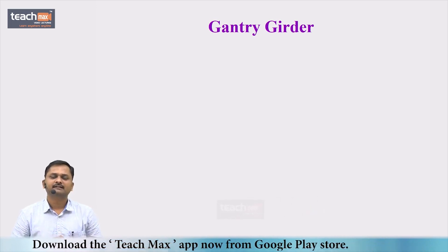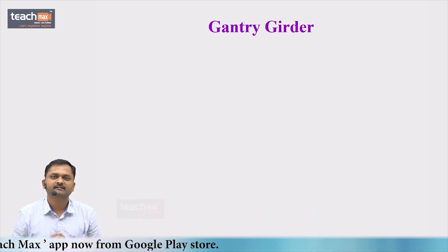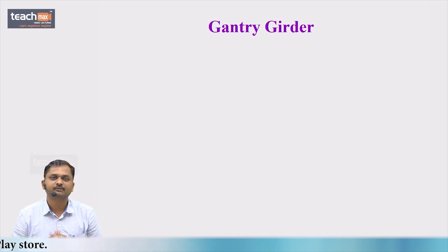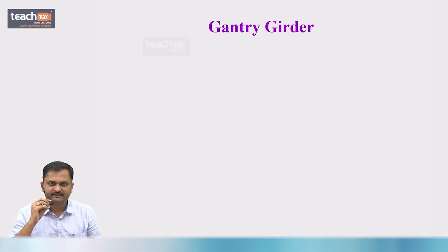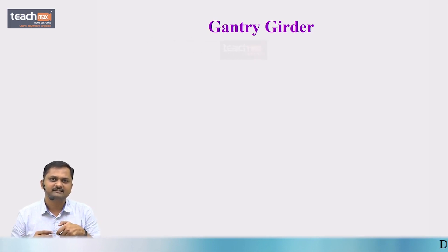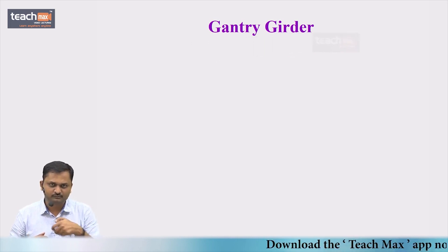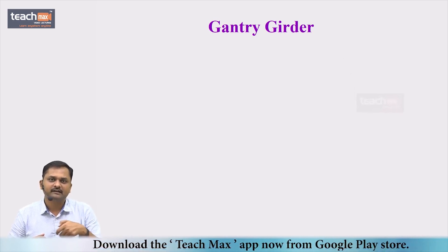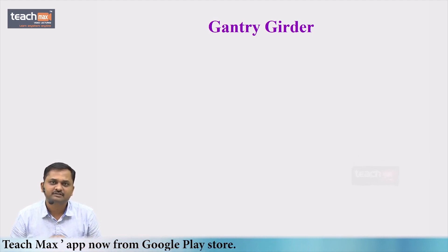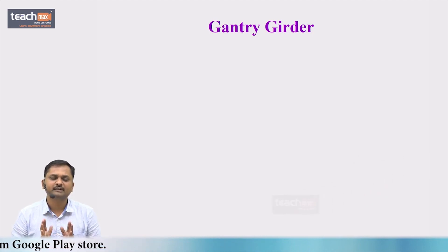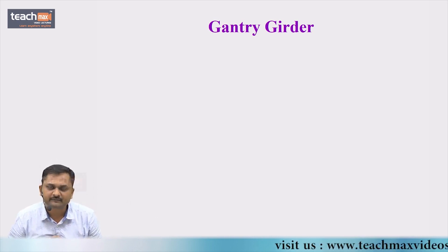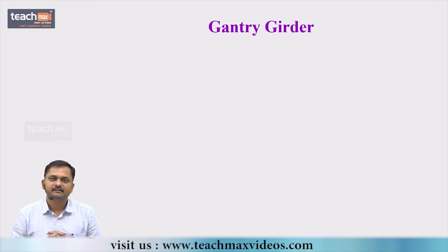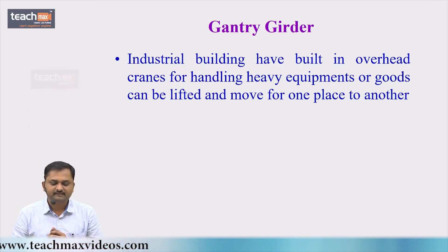Hello and welcome to Teach Max Videos. Let us design a gantry girder. A gantry girder is an industrial beam generally provided in industrial buildings, which is used to support a crane girder. The crane girder moves within an industrial building, and a trolley assembly with a hook moves along both the crane girder and the gantry girder. So gantry girders are subjected to moving types of loads — they are heavy beams subjected to moving loads.